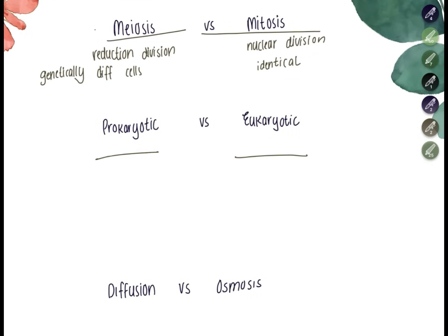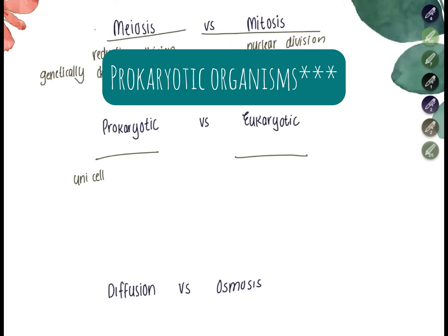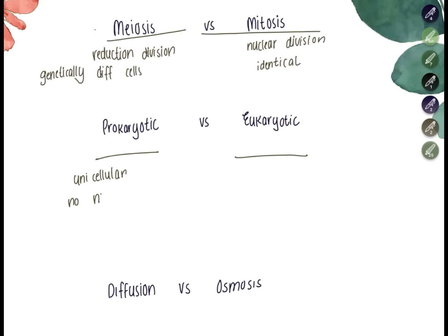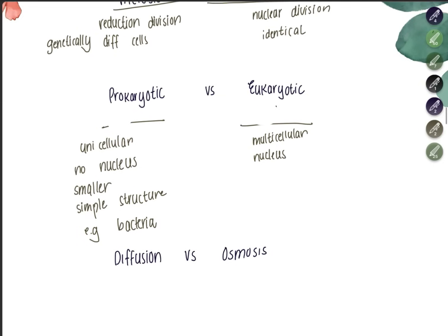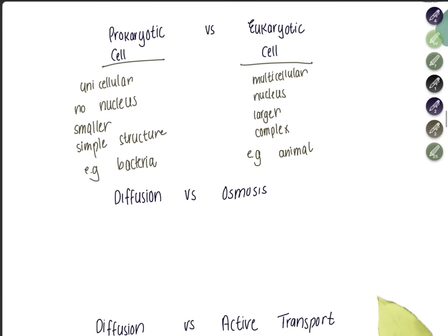Prokaryotic cells are unicellular — they have only one cell, no nucleus, and their DNA is in the cytoplasm rather than inside a nucleus. They are much smaller with a very simple structure. An example is bacteria. Eukaryotic organisms are multicellular, have a nucleus containing DNA, are larger, and have complex organelles. Examples include animal cells, plant cells, fungi, and protists.